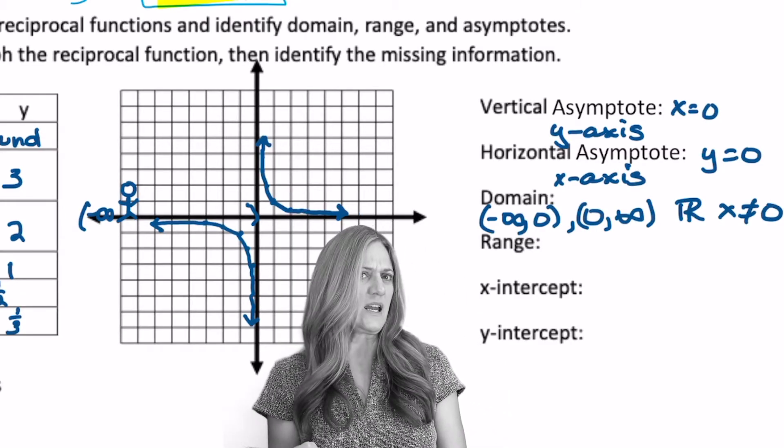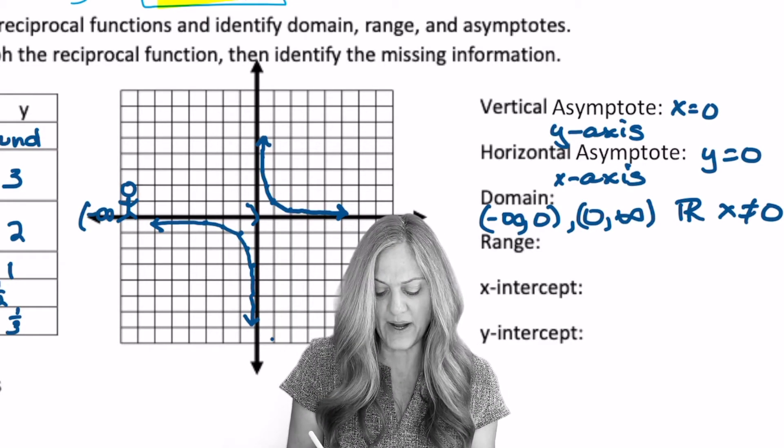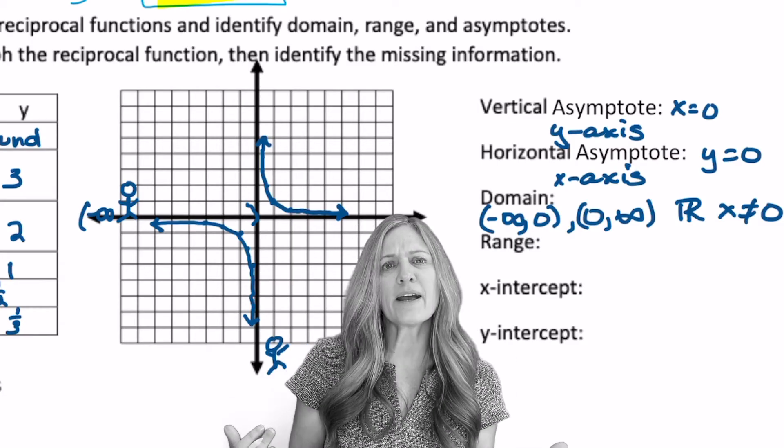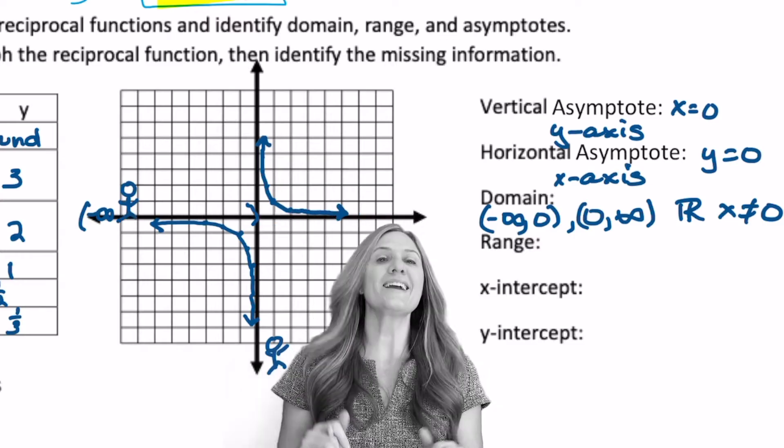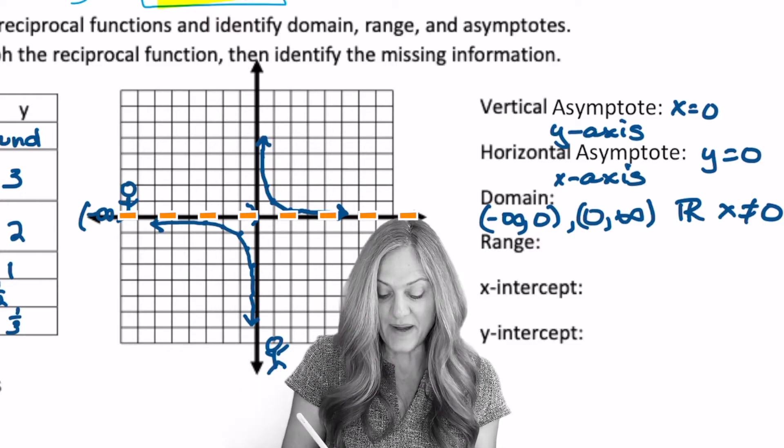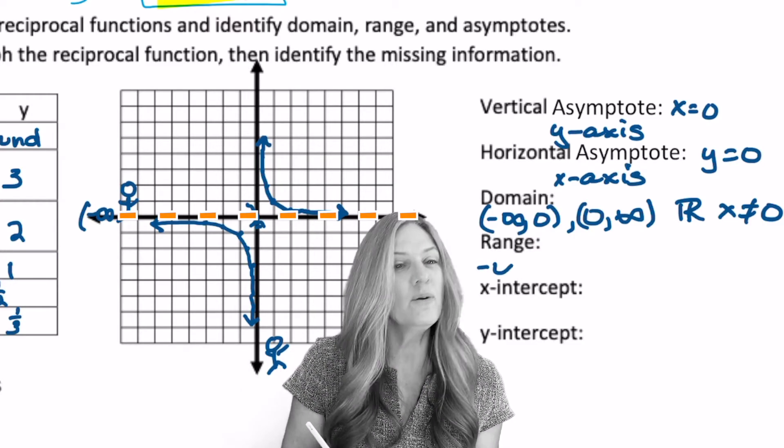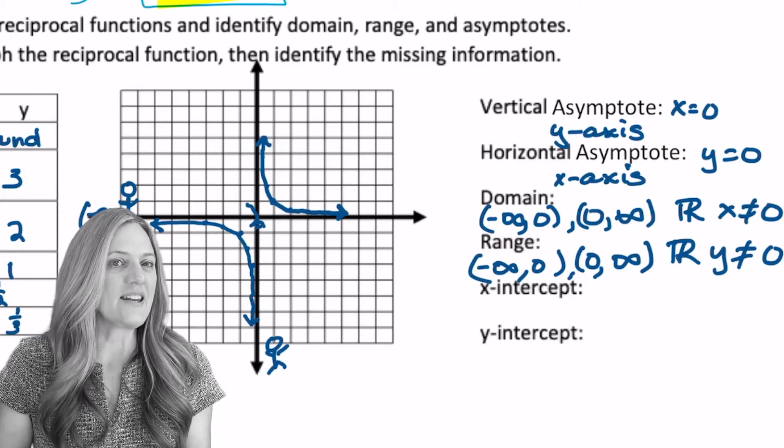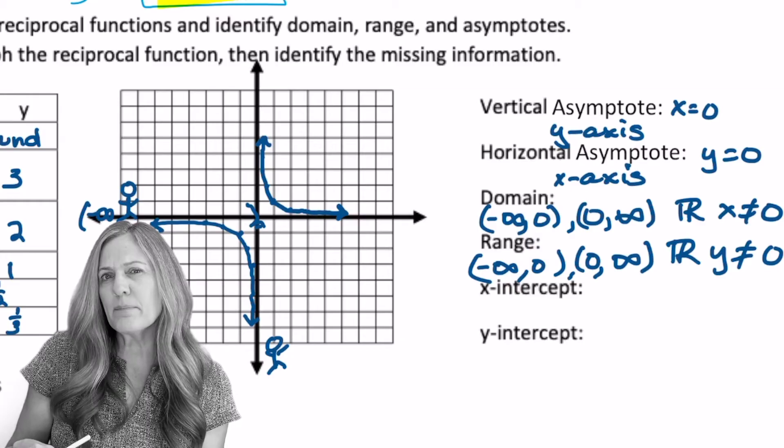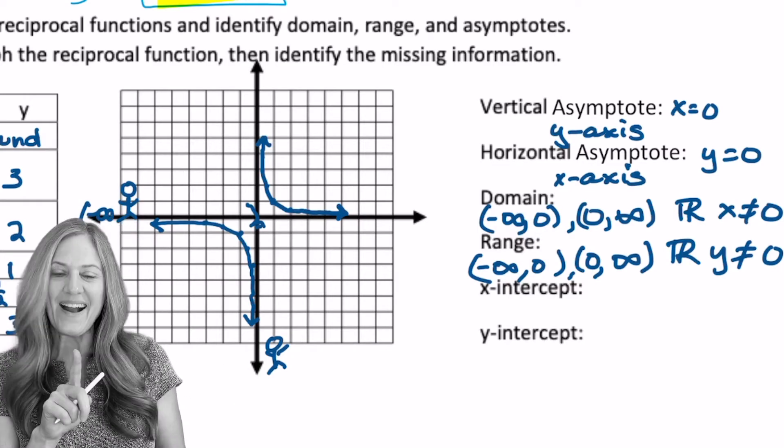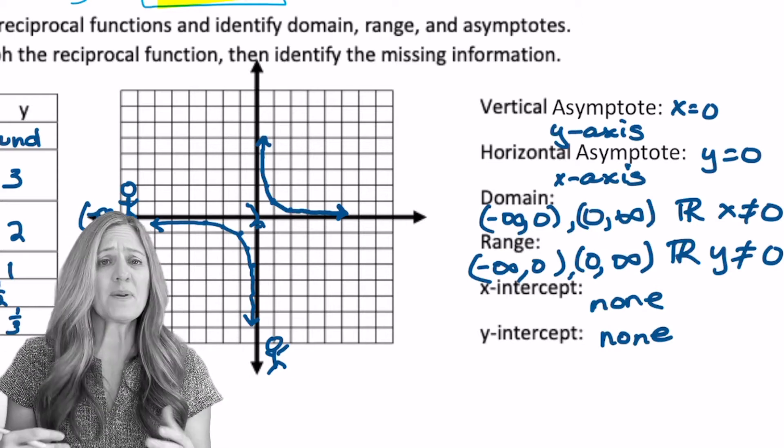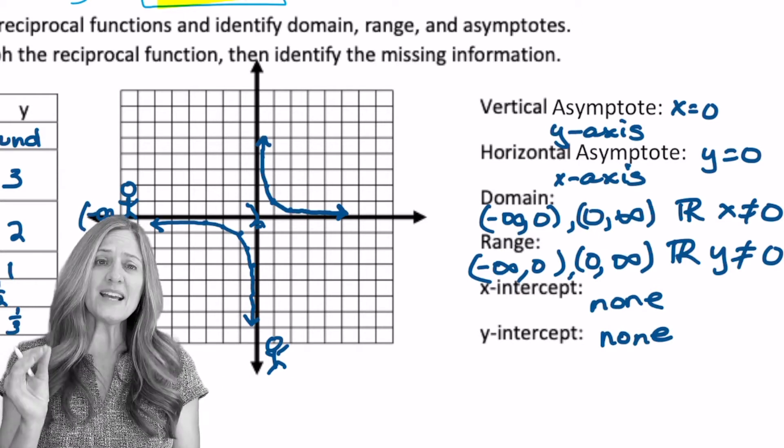What about the range? Kind of that same idea. Remember, now we're climbing up the y-axis. I have graph everywhere I go, except when I get to 0 again. So from negative infinity up to 0, and then from 0 to positive infinity. So to emphasize now, do we have an x-intercept? Nope. Do we have a y-intercept? No. Remember, don't leave it blank, because that seems like you don't know. Tell me none.